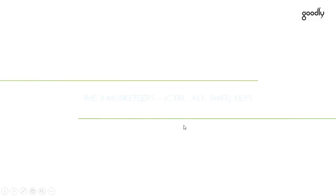Hi everyone, this is Chandip Chhabra at Goodly. I'm sure all of you have heard about The Three Musketeers, the novel. The Three Musketeers were great inseparable friends that used to stay together all the time. I have something similar in PowerPoint — I call them The Three Musketeers in PowerPoint: the Ctrl, Alt, and Shift keys. Great keys with great utilities. Let's see how we can use them while working in presentations.